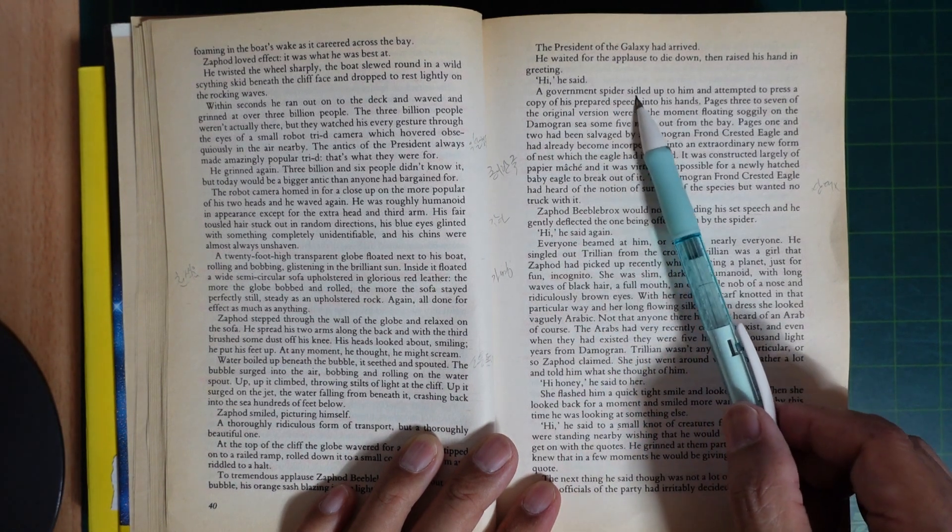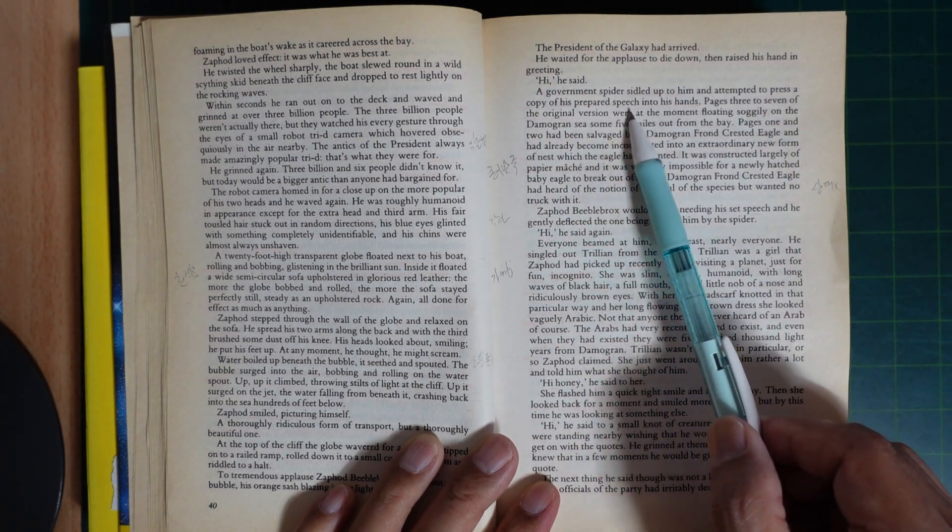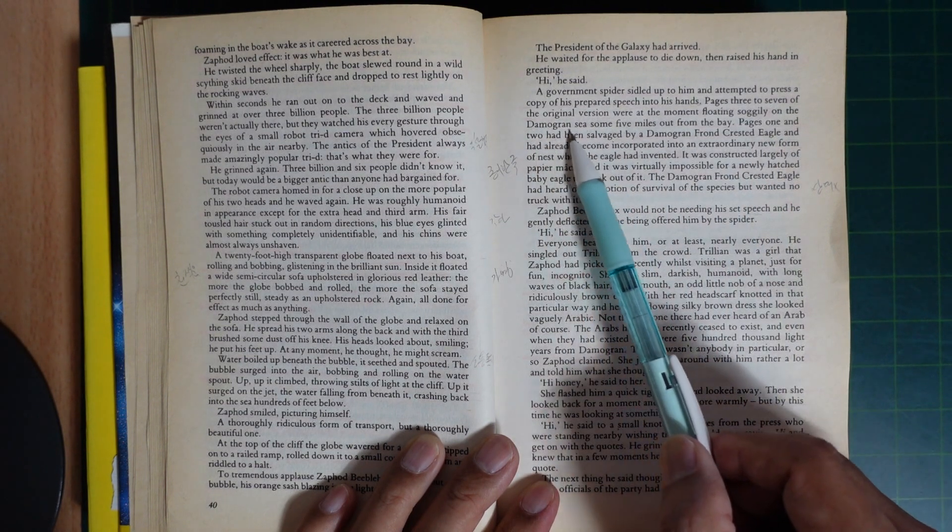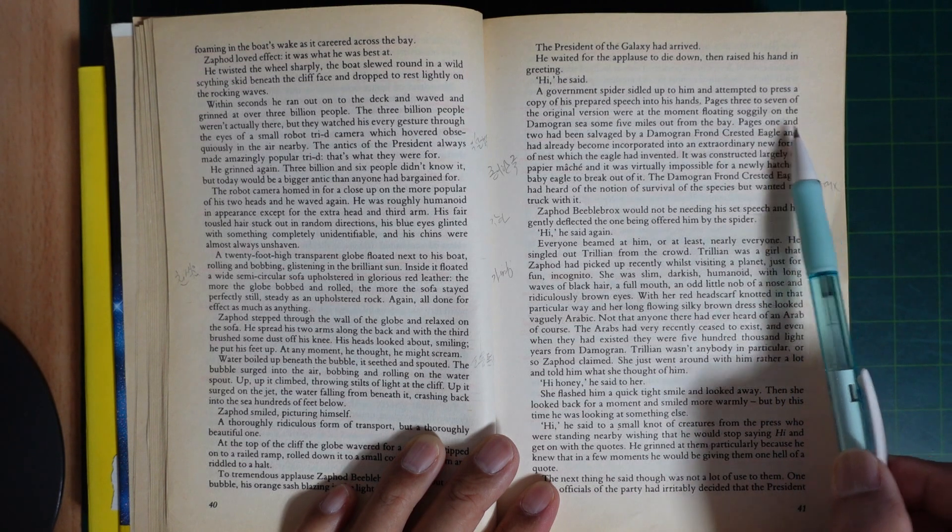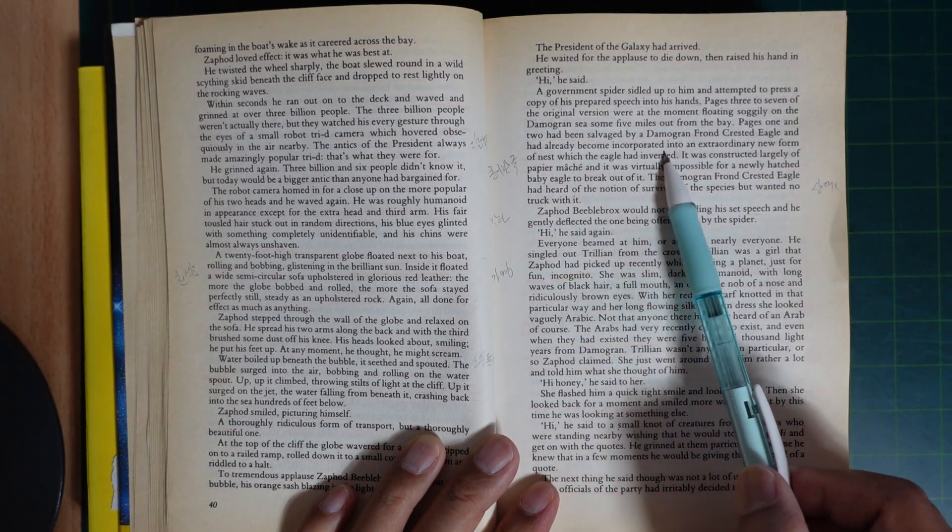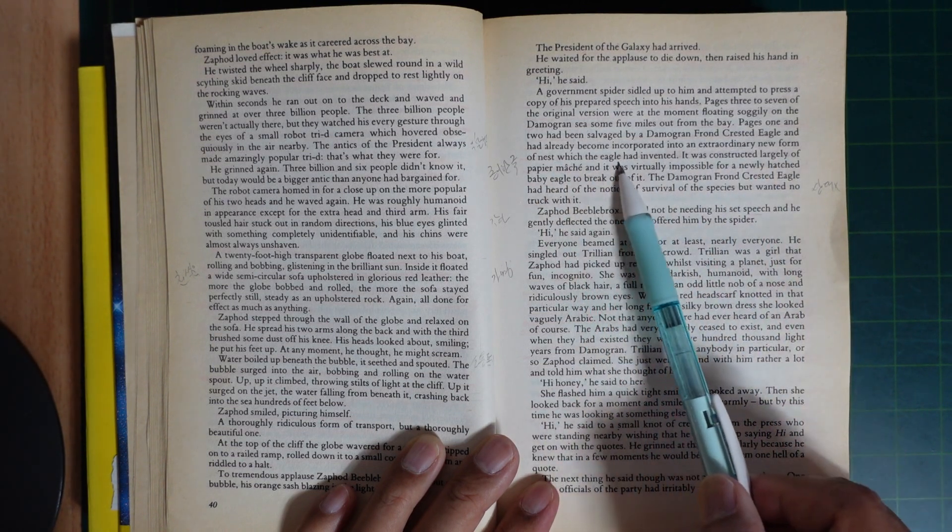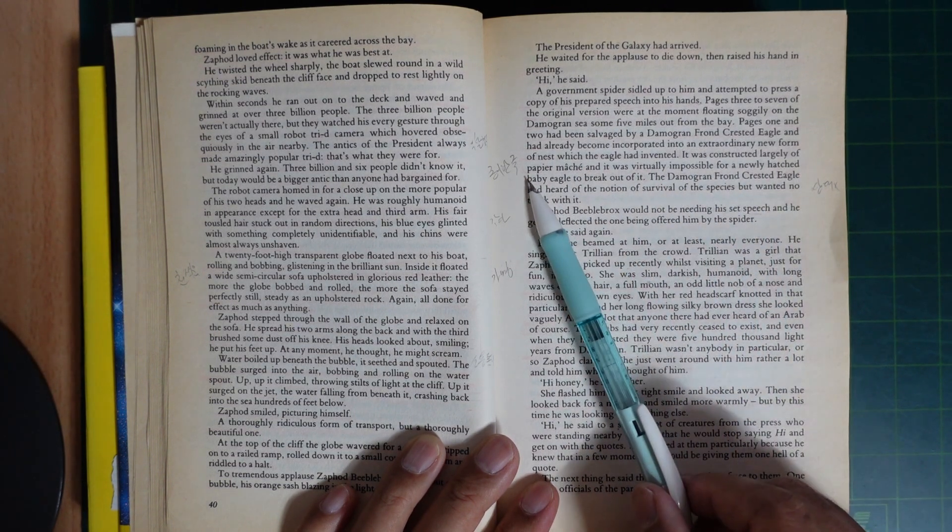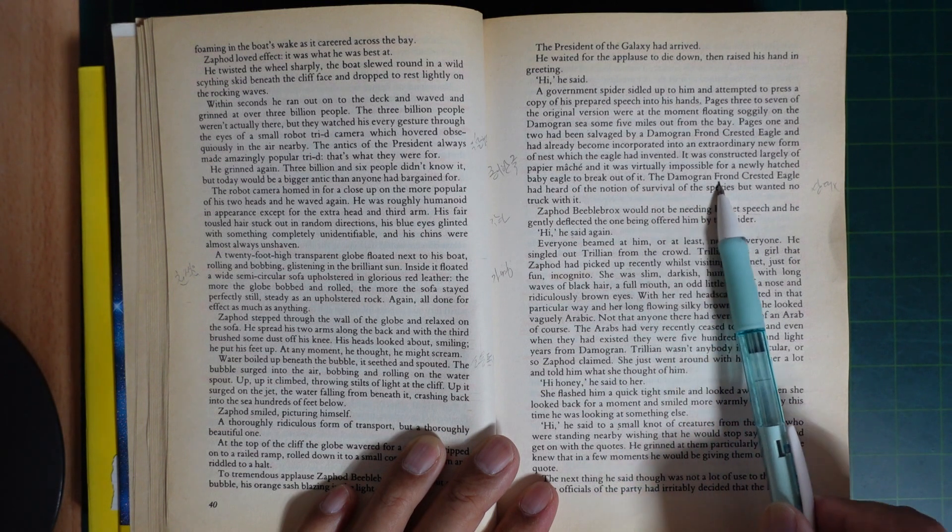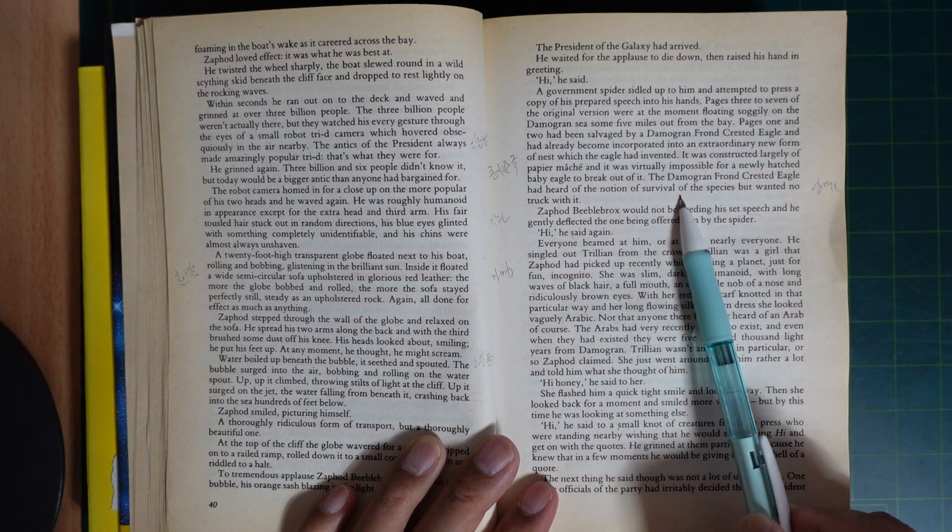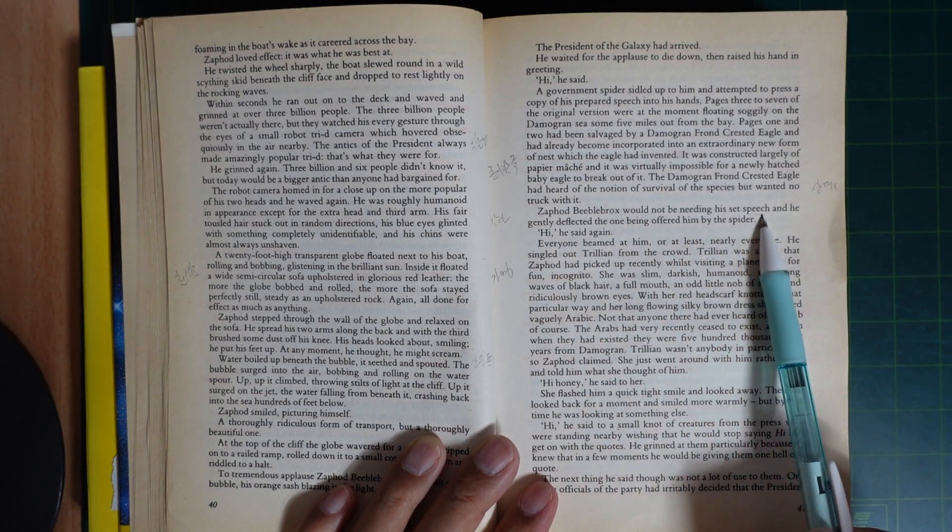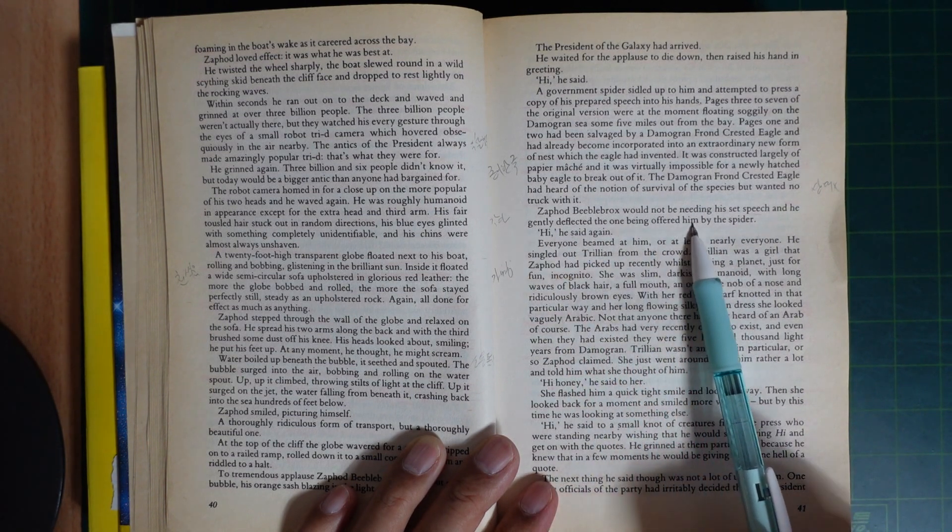Hi, he said. The government spider sailed up to him and attempted to press a copy of his prepared speech into his hand. Pages three to seven of the original version were at the moment floating soggily on the Damogran sea, some five miles out from the bay. Pages one and two had been salvaged by a Damogran frond crested eagle and had already become incorporated into an extraordinary new form of nest which the eagle had invented. It was constructed largely of papier-mâché. It was virtually impossible for a newly hatched baby eagle to break out of it. The Damogran frond crested eagle had heard of the notion of survival of the species but wanted no truck with it. Zaphod would not need his sad speech and he gently deflected the one being offered him by the spider.